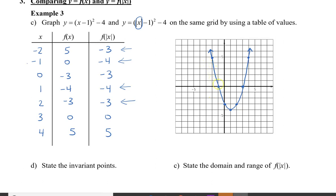Let's see what it looks like when I graph this. Plotting negative 2 negative 3, negative 1 negative 4, and so on. Even if I pick x equals negative 3, that gives the same y value as x equals 3, which is 0. If I pick x equals negative 4, that gives the same y value as x equals 4, which is 5. So I get a graph where any negative x value gives the same y as its positive counterpart — a reflection of the positive side over the y-axis.